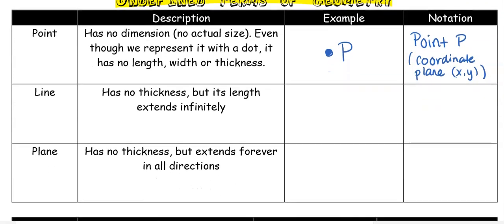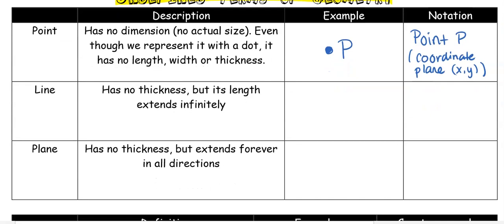The next undefined term is a line. A line has no thickness, but its length extends infinitely. So if I have a line with points A and B, this extends towards B forever and ever, and past A forever and ever.